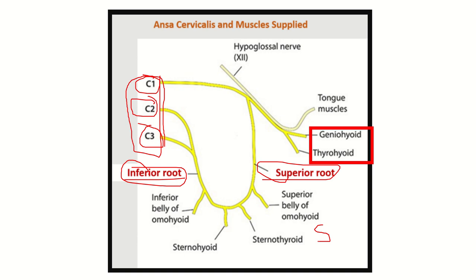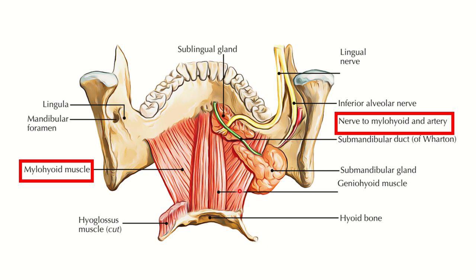In total, five muscles are supplied by the ansa cervicalis: geniohyoid, thyrohyoid, omohyoid, sternohyoid, and sternothyroid. The other muscle in the options is the mylohyoid muscle.